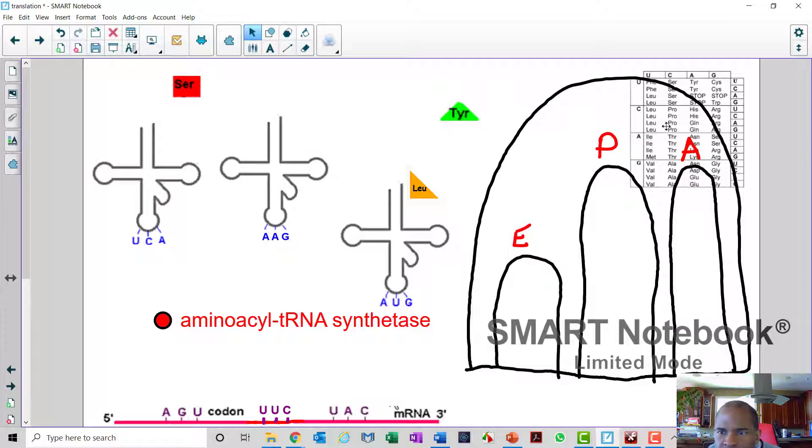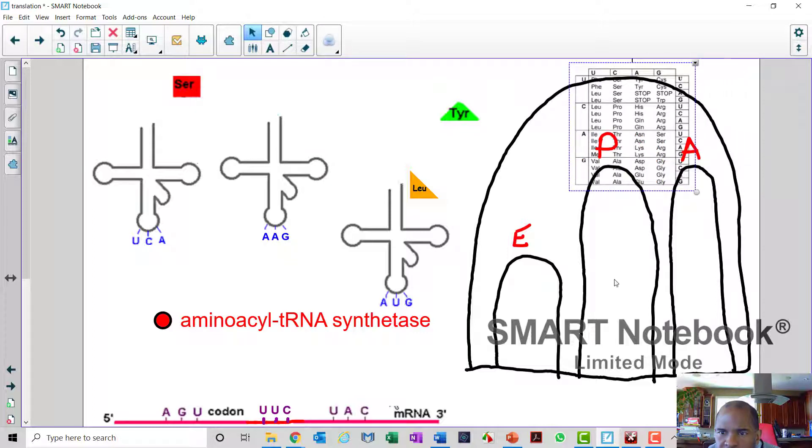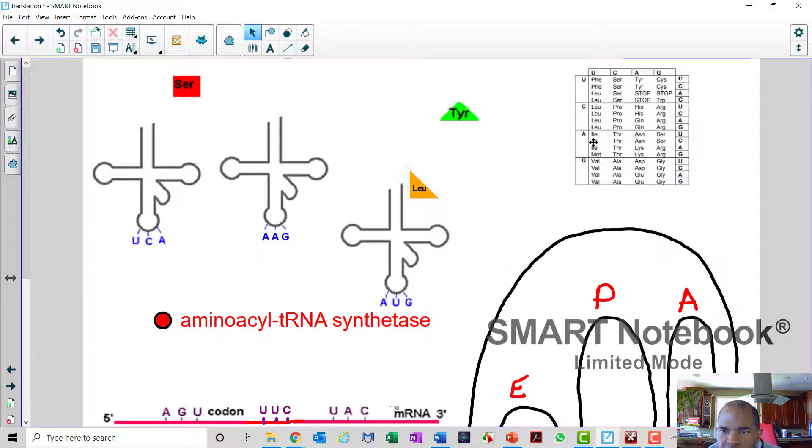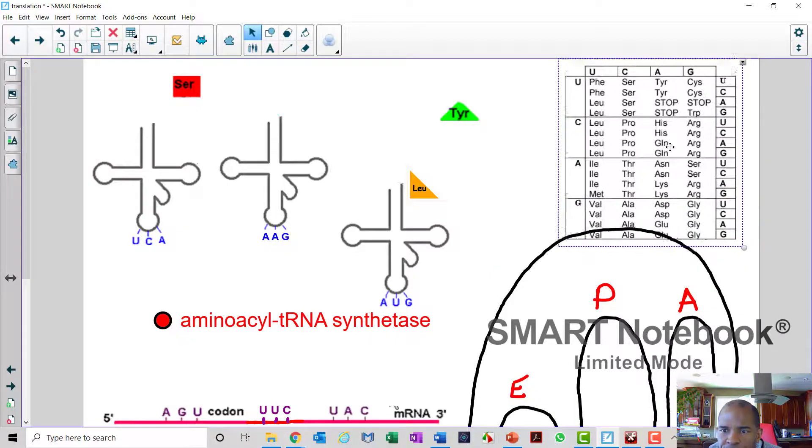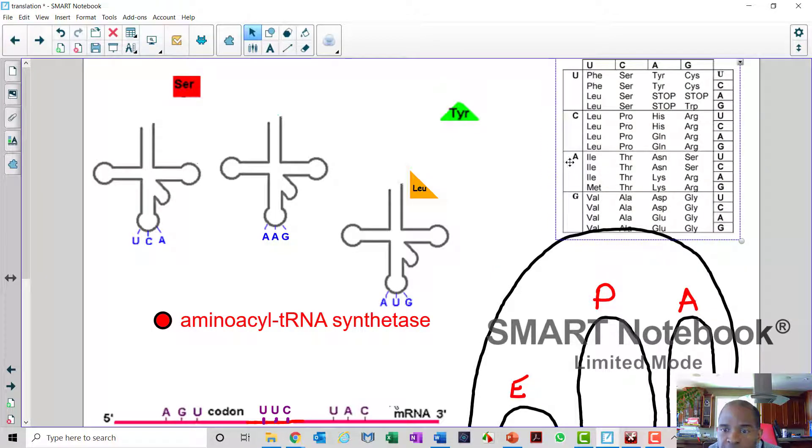The AGU, let's look at the table here, if you guys can see it. Let's move these things out of the way, make my table a bit bigger. So my AGU, A-G-U, A-G-U is serine.